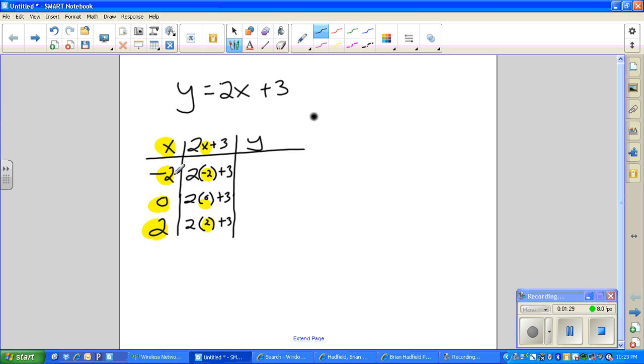So let me calculate, and I have no problem if you want to calculate this mentally or use a calculator just to double check. But 2 times negative 2 is negative 4, plus 3 is negative 1. 2 times 0 is 0, plus 3 is 3. And 2 times 2 plus 3 is 7.